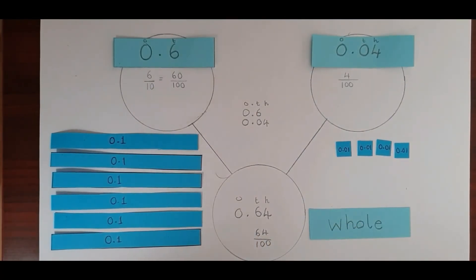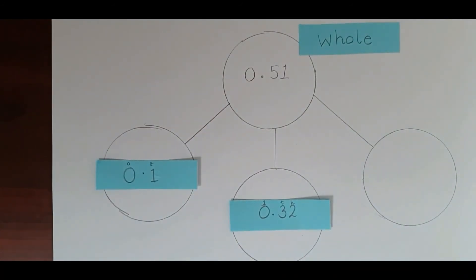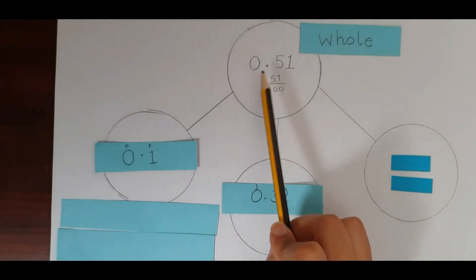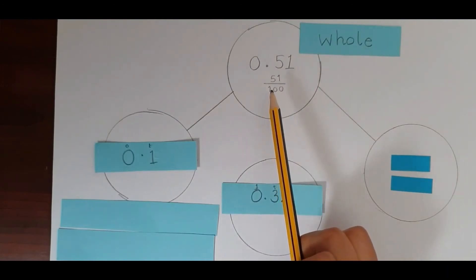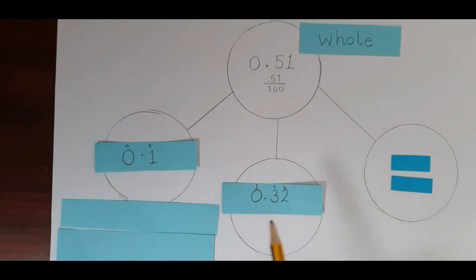Now let's have a go at another one on your own. Here's another part-whole model. As we know, part-whole models can have more than two parts — this one has three parts. In this question our whole has been given: it's 0.51, which is equivalent to fifty-one hundredths. They've also given us two parts: 0.1 and 0.32. Press pause now and try to work out the missing part, then press play when you're ready to check your answer.